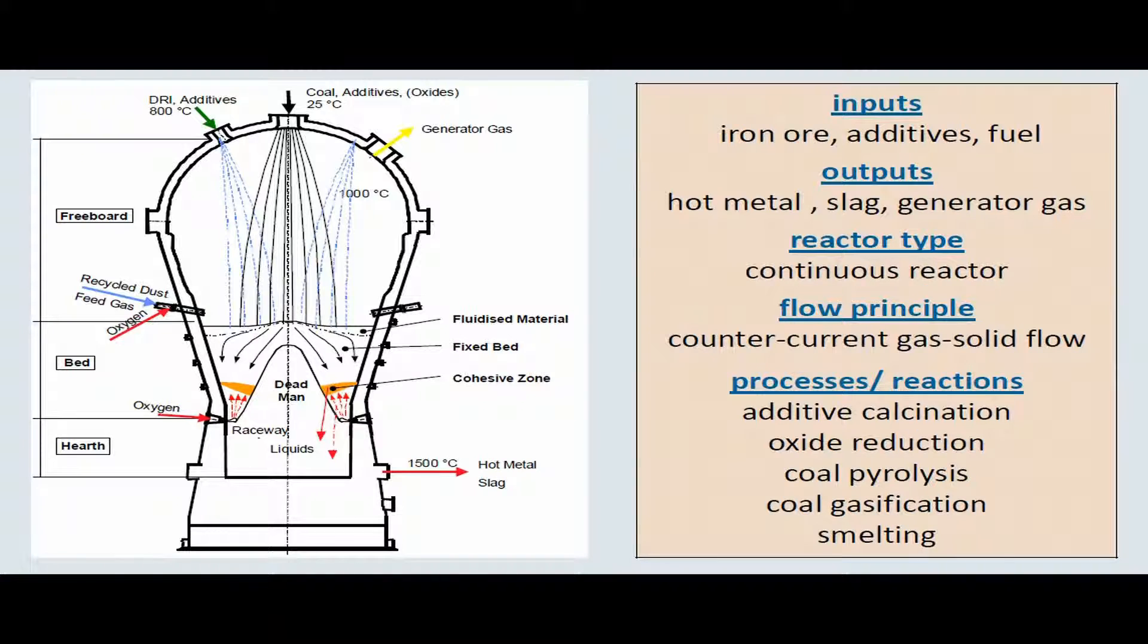The generator gas exits the melt gasifier through its top and is further processed in order to pre-reduce the iron ore, either in a shaft in case of Corex process, or in a fluidized bed reactor cascade in case of Finex process.